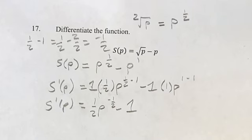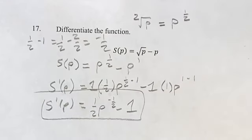Minus 1 times p to the 0. What is p to the 0? Well, anything to the 0 is 1, so it's just minus 1, and this is going to be your final answer.